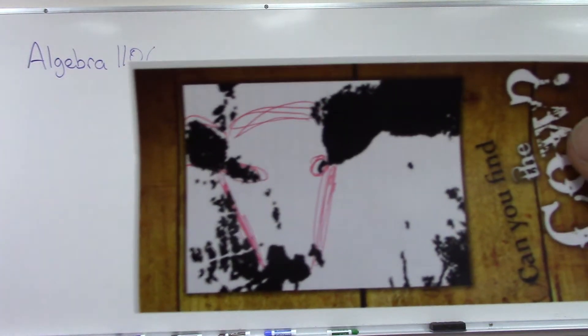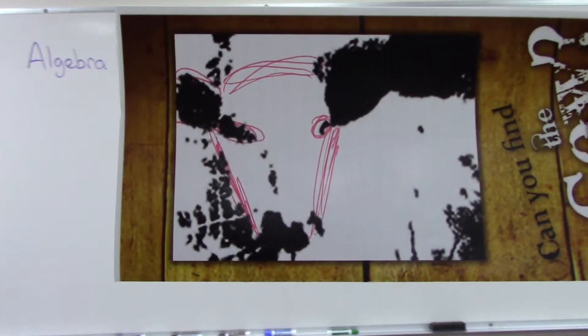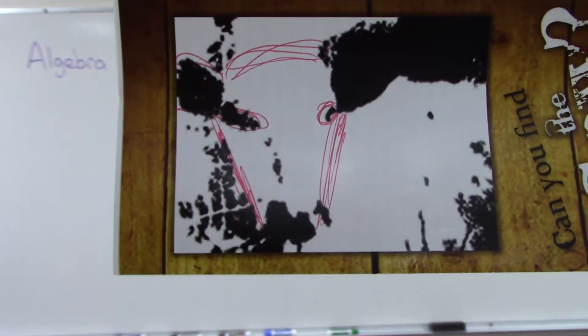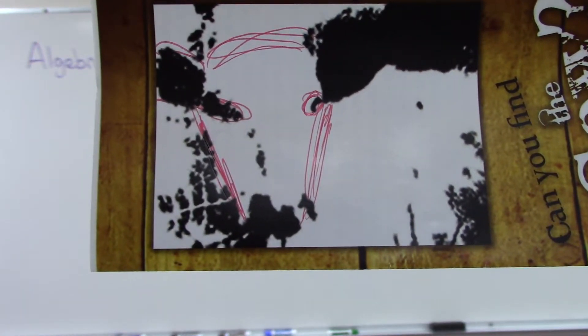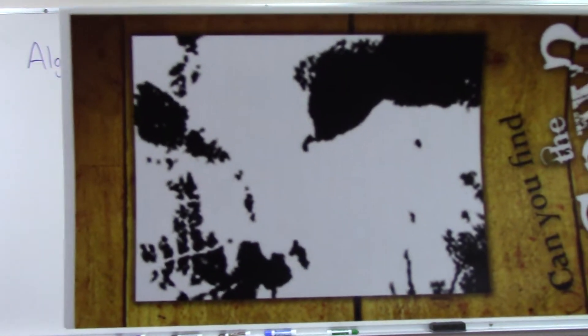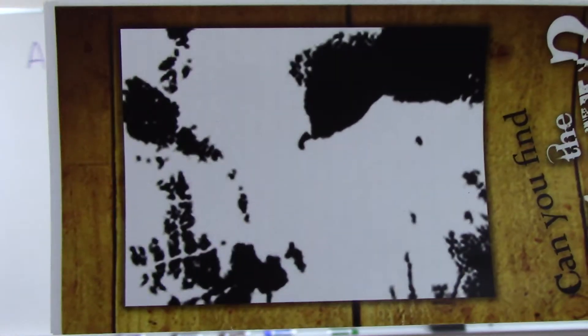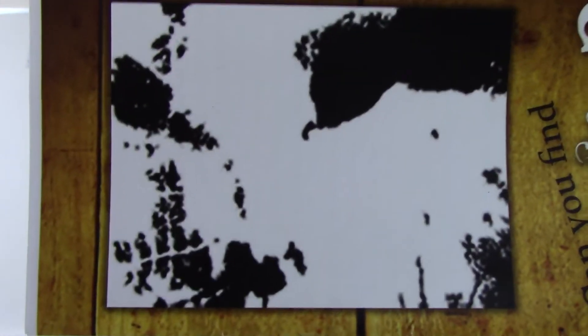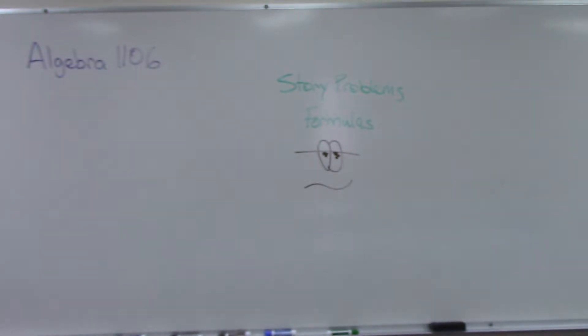All right, now what if I hold up one where I've highlighted the face of the cow? Now do you see the eyes? Then you see the head, and now you see the ears, right, and the nose. So now that you've seen that, when I come back with this picture, you're like, oh yeah, now I see it.